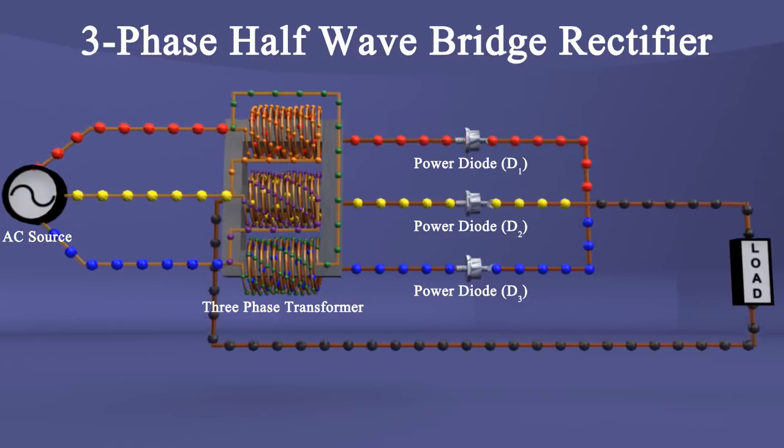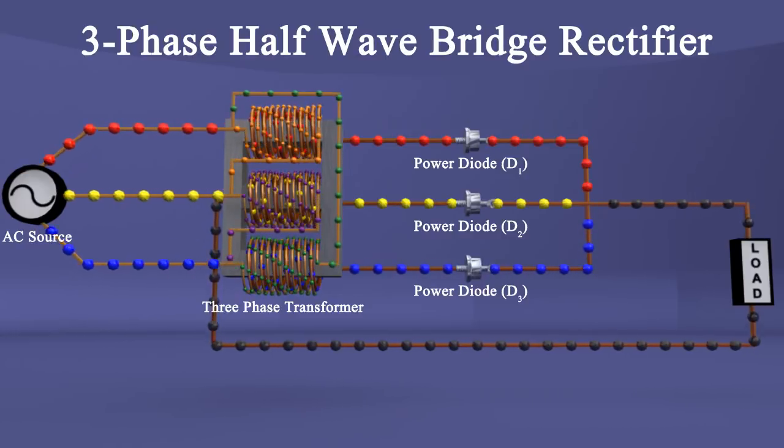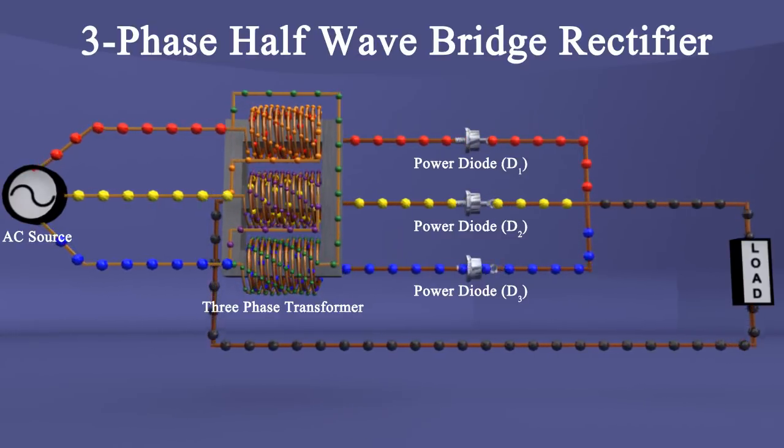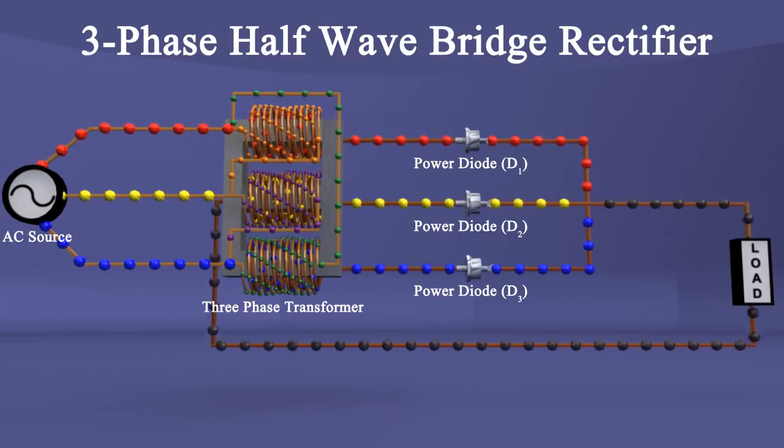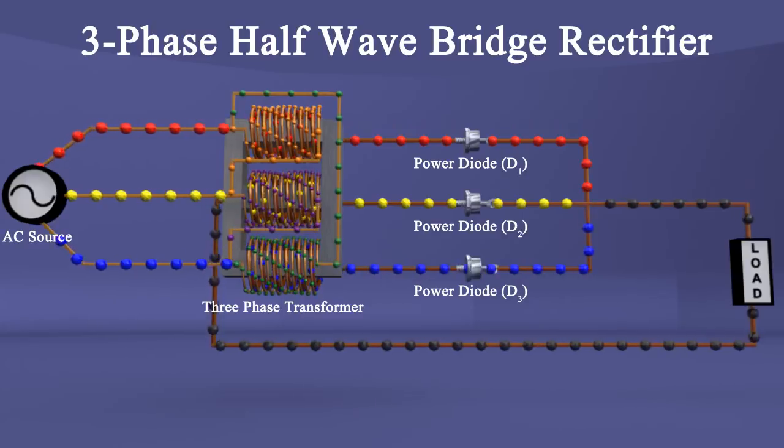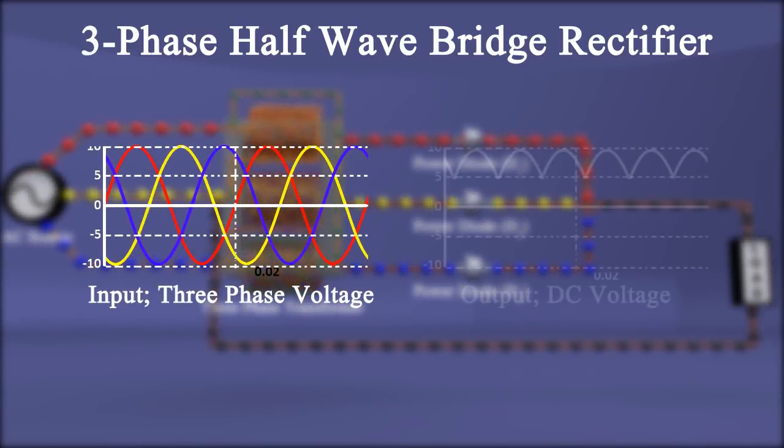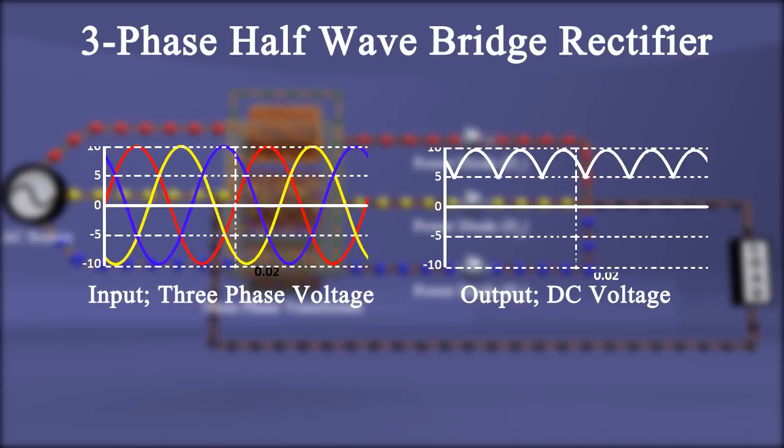Now let's come to the topic: three-phase half-wave bridge rectifier. It converts three-phase alternating current into direct current. As it converts only half wave of each phase, that's why it is known as three-phase half-wave rectifier.